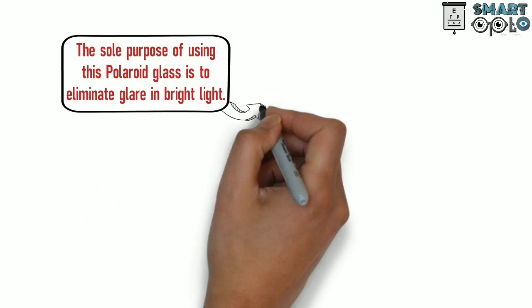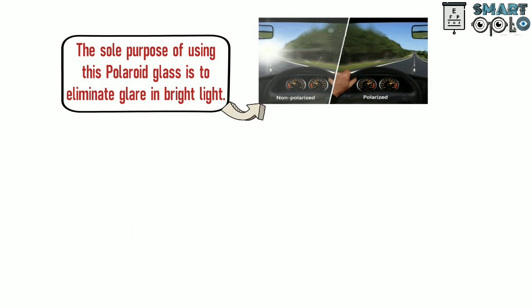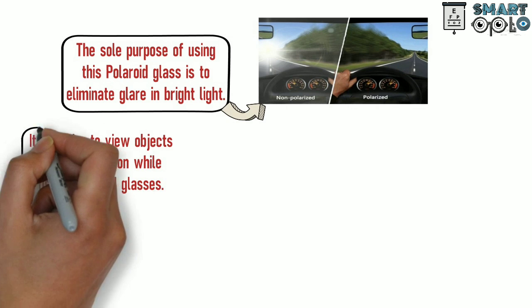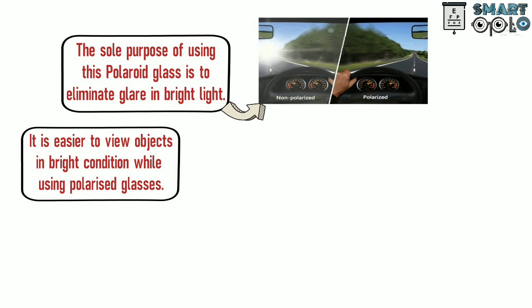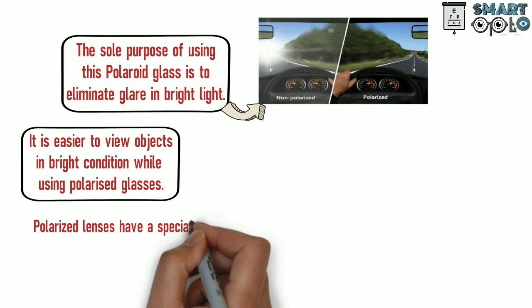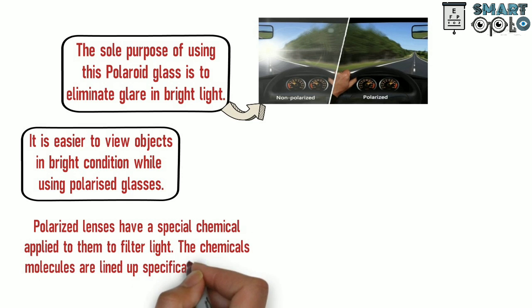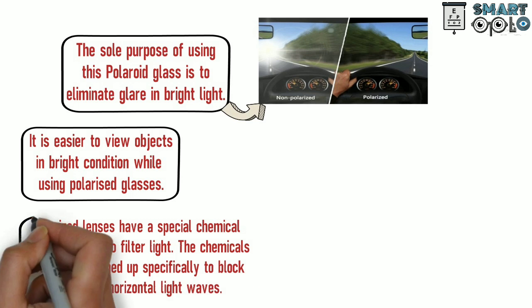The sole purpose of using this Polaroid glass in sunglasses is to eliminate the glare in bright light. It is easier to view objects in bright conditions while using Polaroid glasses. Polarized lenses have a special chemical applied to them to filter light. The chemical molecules are lined up specifically to block out all the horizontal light waves.